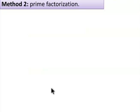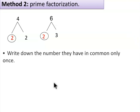Method 2 is prime factorization using factor trees. 4 is divisible by prime number 2. 6 is divisible by prime number 2. Write the numbers they have in common only once. Here, it is circled.